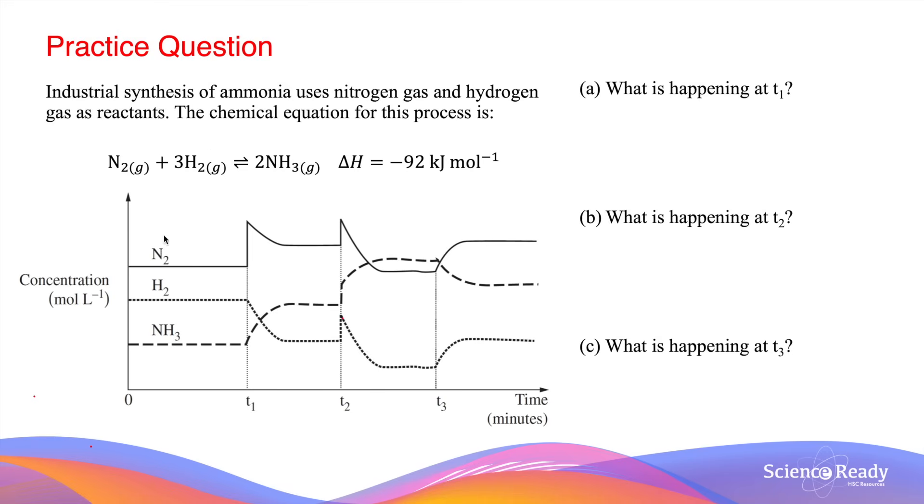Let's start by looking at the very beginning part of the graph, where the concentrations of the three substances are constant and not changing. This is a characteristic feature of the reaction at equilibrium. Recall that at a dynamic equilibrium, the reaction, that is the forward and reverse reactions, are still occurring.